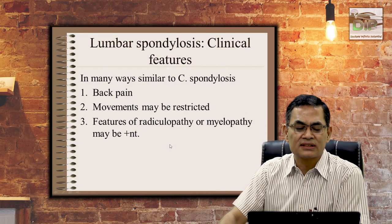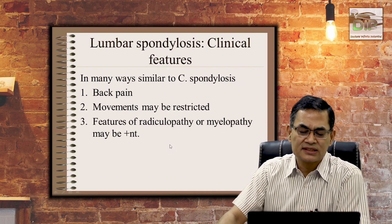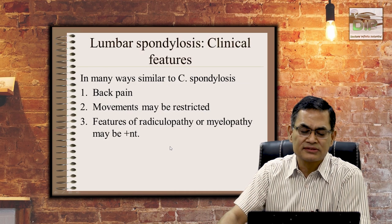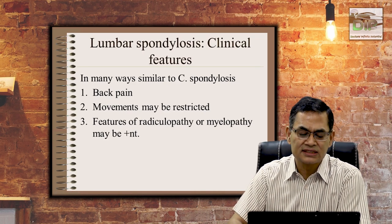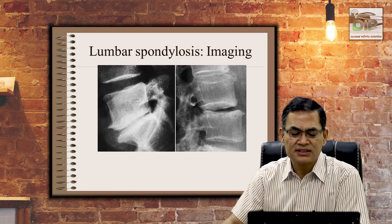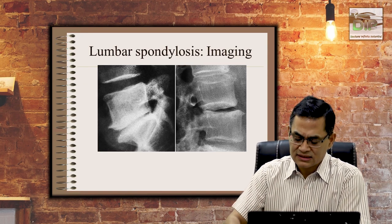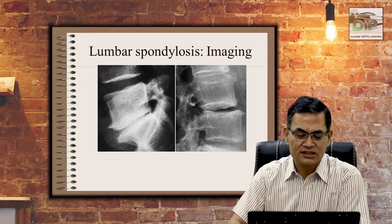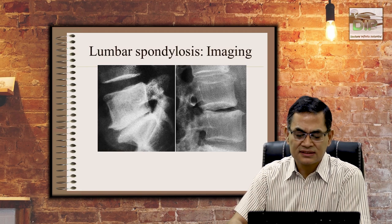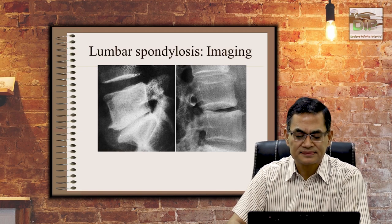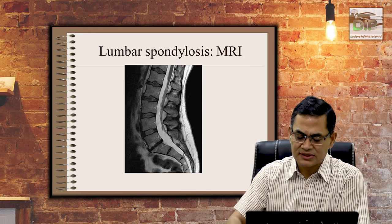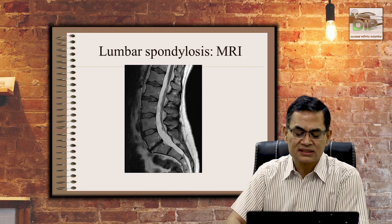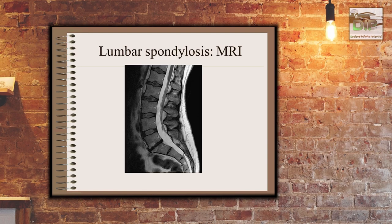Lumbar spondylosis is in many ways similar to cervical spondylosis. The patient will complain of back pain, movements will be restricted, and there may be features of radiculopathy or myelopathy. X-ray findings include osteophytes, subchondral sclerosis, and reduced disc space. As with cervical spondylosis, MRI provides more detail and reveals features not visible on X-ray.